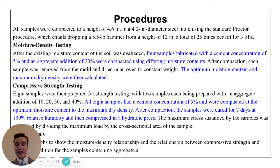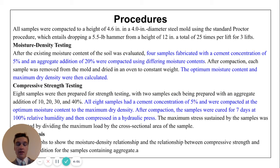To be able to do these tests again with aggregate, I started with four samples, each with 5% — a low value of cement — and an addition of 20% aggregate. Each were compacted using different moisture percentages. Using this, I was able to replicate the experiment and calculate an optimum moisture content and a maximum density. These values were then used for the compressive strength testing.